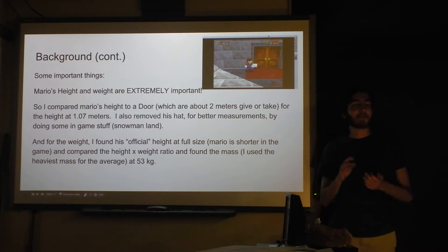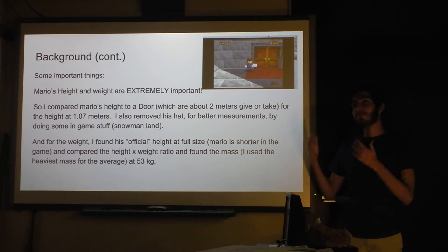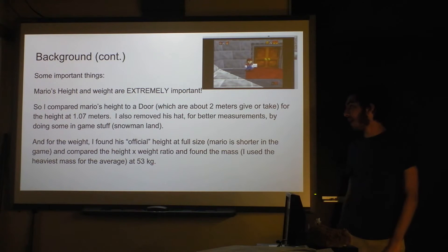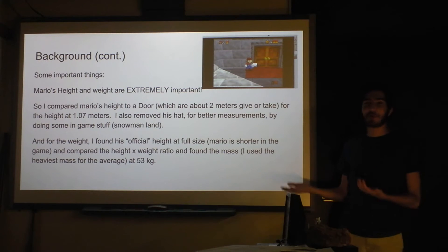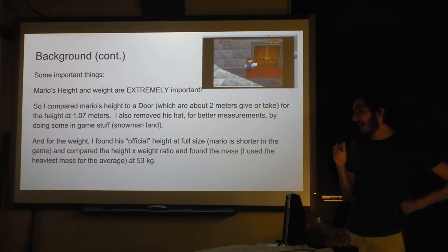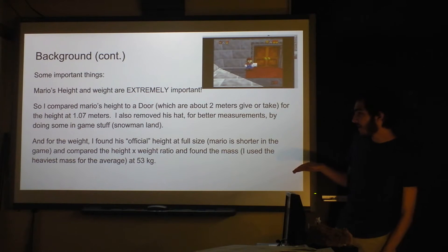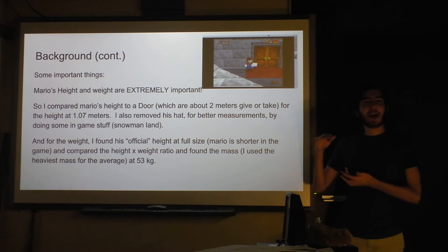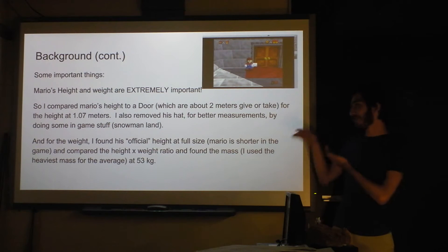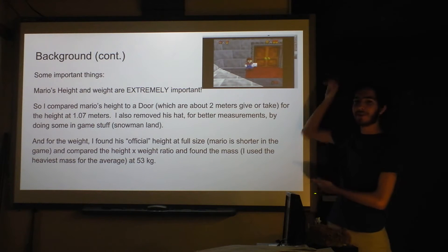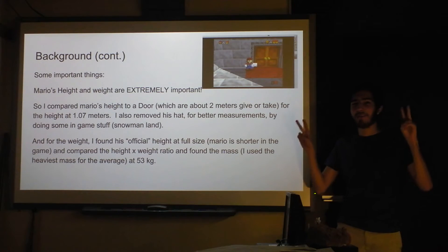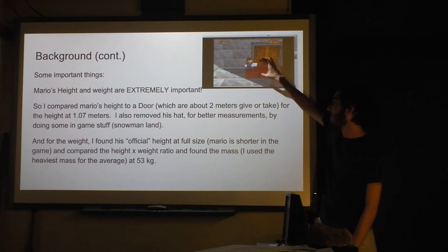For background, finding Mario's height was probably the most important thing, because you can measure it at any time wherever you want to find him falling. I found a way to take off Mario's hat, which is something you can do in one of the levels. I didn't quite know what I should have done to find Mario's exact height. There was an official height, but it was too high compared to doors, and most doors are two meters, so that's kind of the grand assumption. I could not use the official height because that's for if he was Super Mario — tall, you know. He's clearly very short in this game.